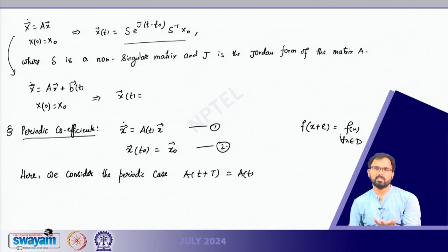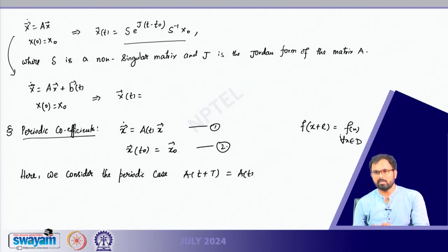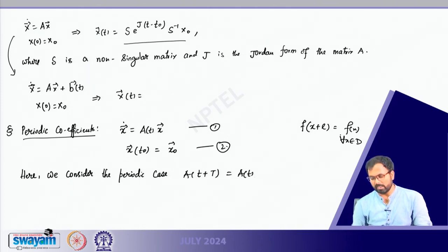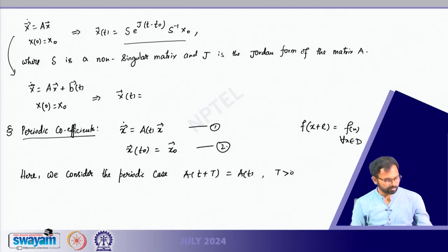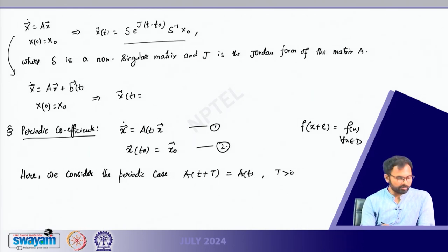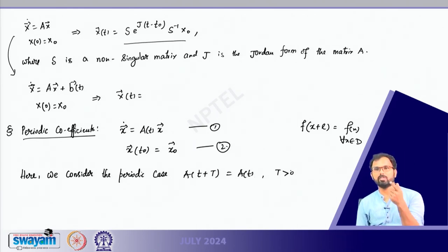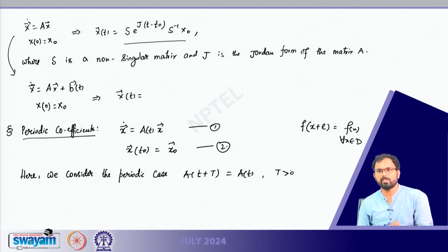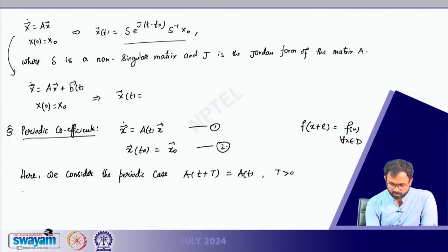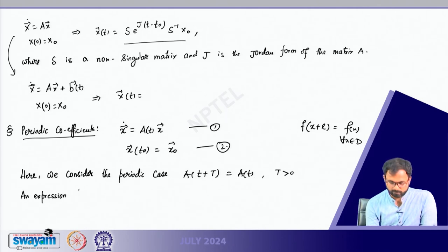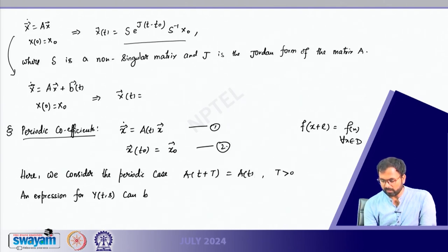Following the analogous definition, we write the periodicity for matrix A as A(t + T) equals A(t) for any positive real number T. Then the expression for the evolution operator y(t,s) can be similarly found as in the previous class.